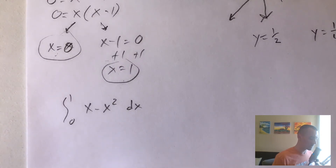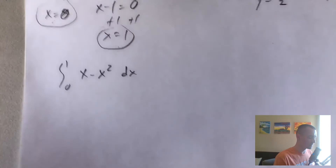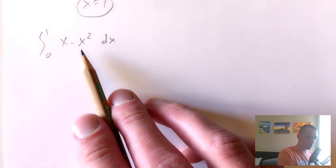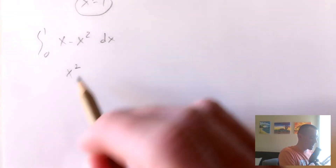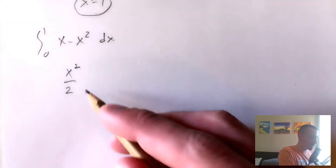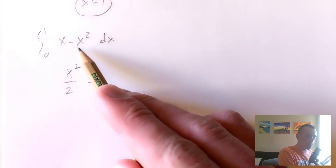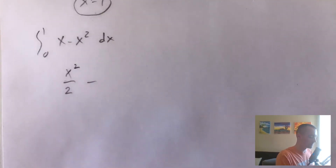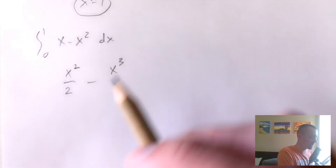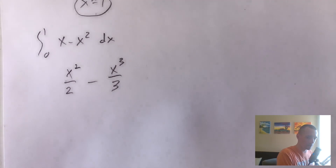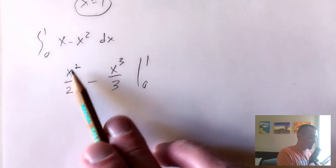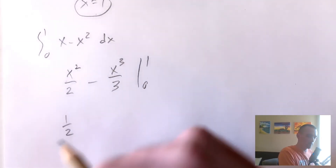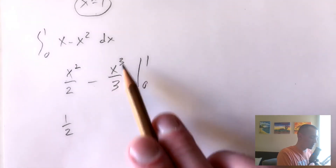Now we integrate using the power rule. The integral of x raises the power by one to get x squared, then we divide by the new power, giving x squared over two. The integral of x squared raises the power by one to x cubed, then divide by the new power, giving x cubed over three. So we evaluate (x²/2 − x³/3) over the bounds zero to one. Plugging in one gives one squared over two, which is one half, minus one cubed over three, which is one third.